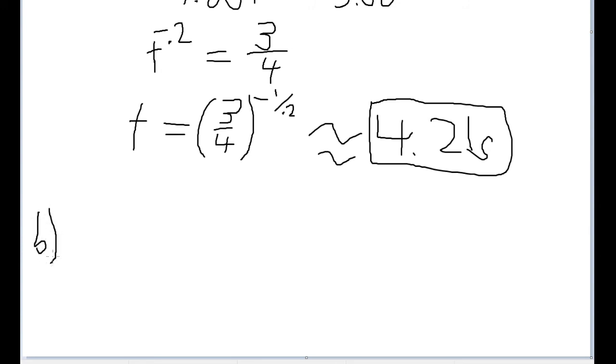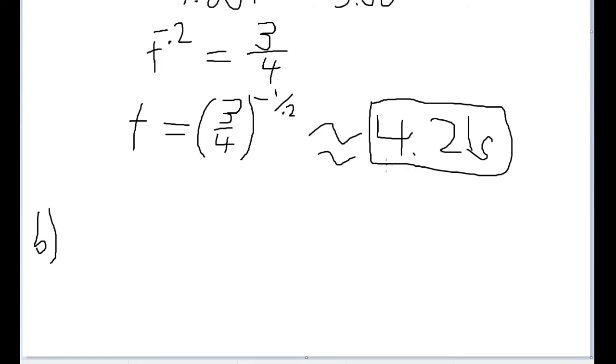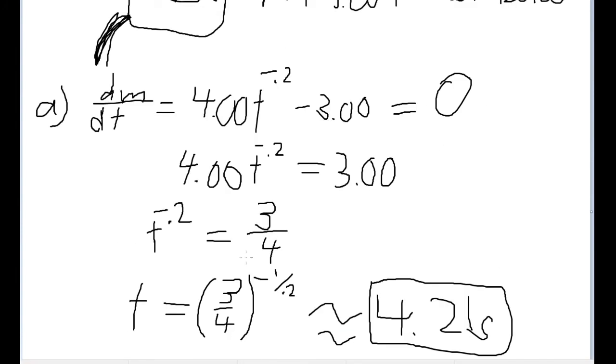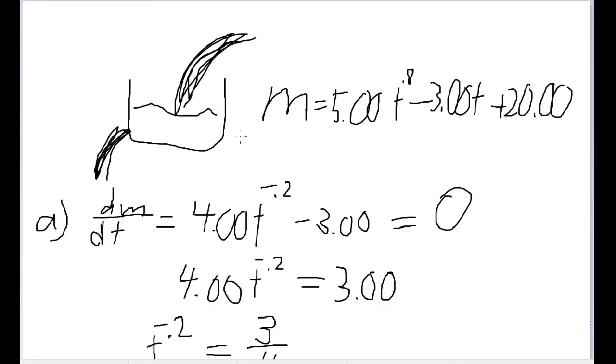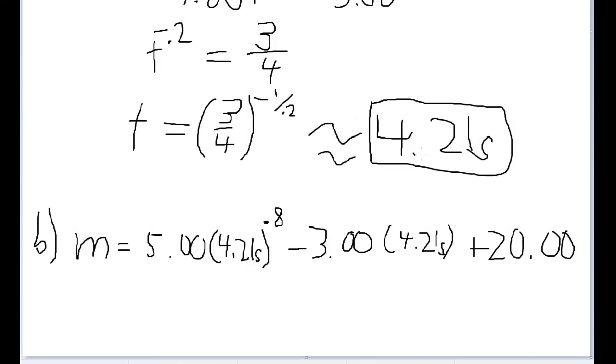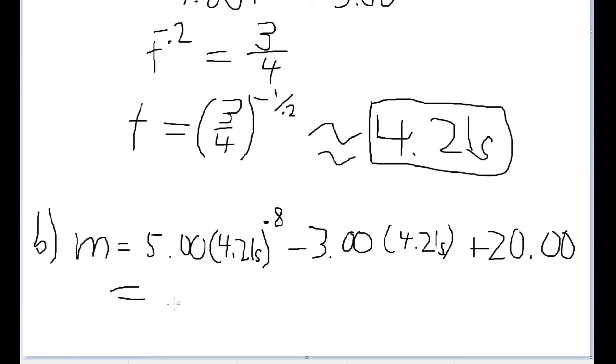Now, Part B is pretty simple. Part B asks us to calculate what that greatest mass actually is. And to do that, we'll just take the time value calculated and plug it into our formula. So here I have plugged the time value into the function here. And it's important to remember to make sure you're plugging the time value into the right function. It's easy to get confused and plug it into this formula instead. But remember that this formula, this derivative, is the formula for the rate of change of mass with respect to time. When the question's asking us to find the actual value for the mass, we'll want to use the original function we have up here. So here I have plugged in 4.21 for every single instance of t in that original function.